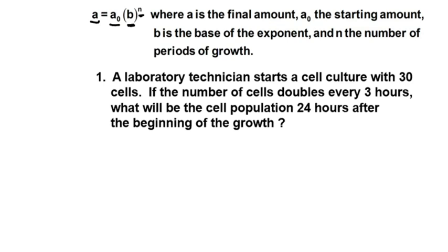The number of cells doubles every three hours. What will be the cell population 24 hours after the beginning of growth? In this case we have a, which we do not know, our final amount is equal to our initial amount, we have 30 cells beginning, times our base of our exponent. What we have for a base of our exponent is doubles, so that's a keyword that signifies 2 is our base. Now we have to find out how many periods the cells doubled. To do that we have 24 hours, a full day, and every three hours.